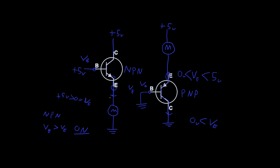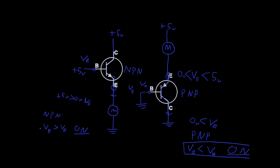The transistor will work like a wire. For a PNP type, when V_B is less than V_E, that is the condition for the system to be on. Those are the two important conditions to remember - for your NPN and for your PNP.